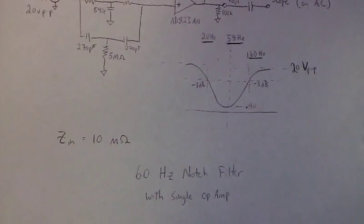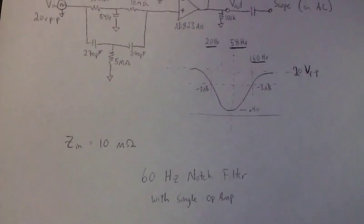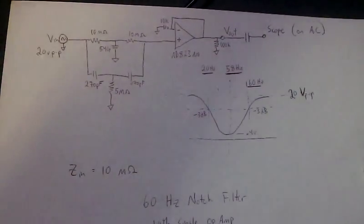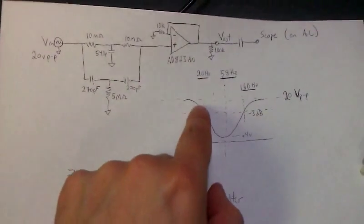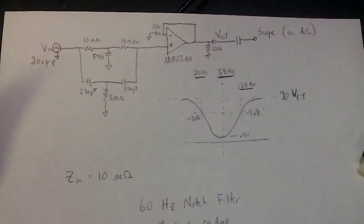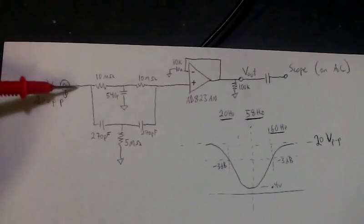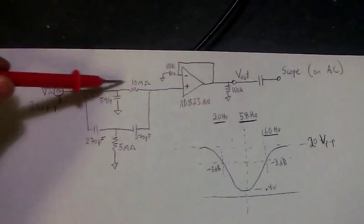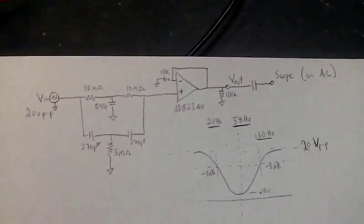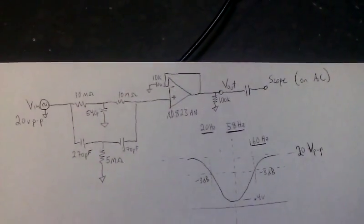So this is just a demonstration of a 60 Hz notch filter with minus 3 dB points at 20 Hz and 160 Hz. And this circuit is pretty self-explanatory. You have the notch filter and you have an op amp to buffer the output of the notch filter.